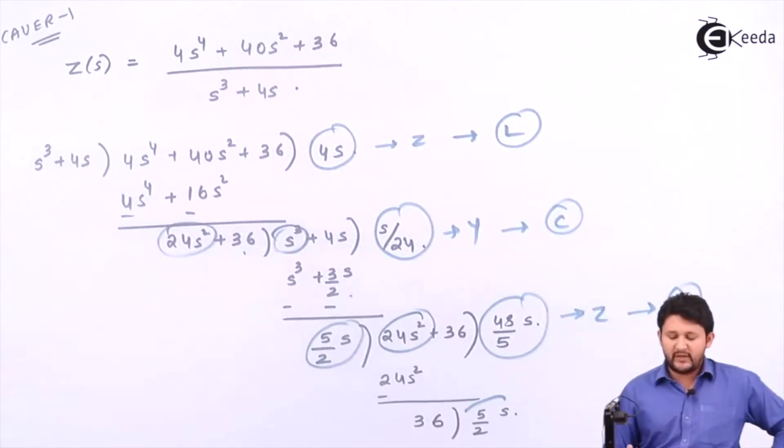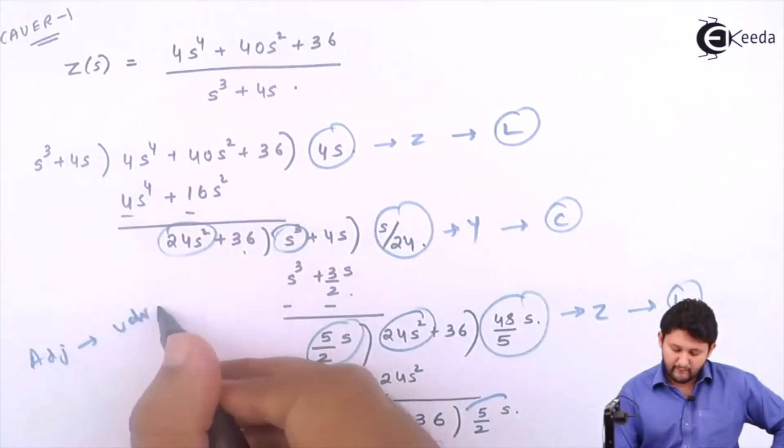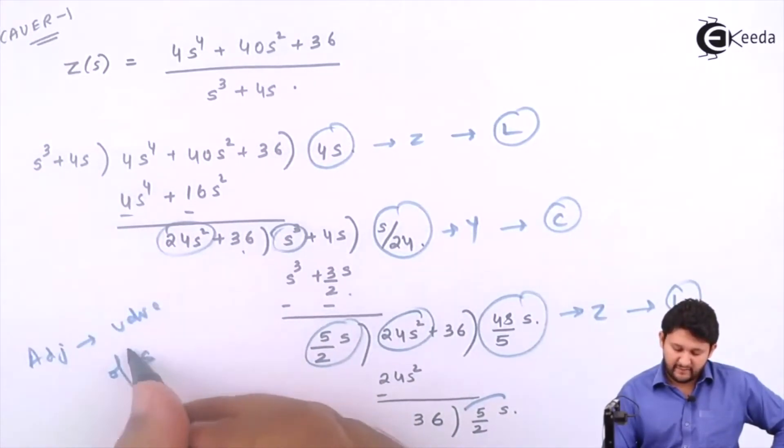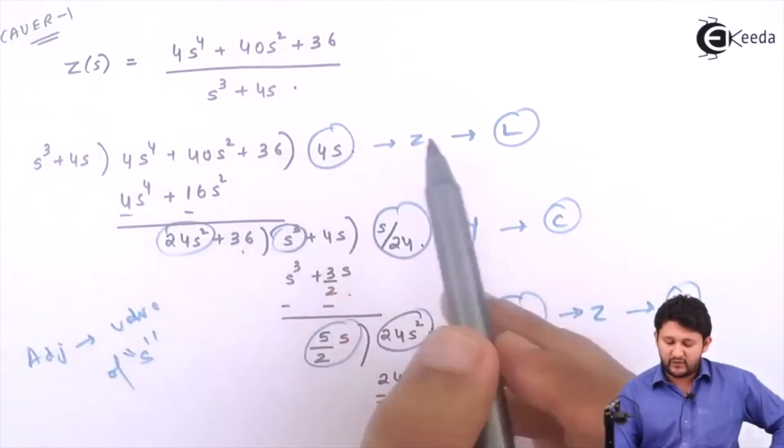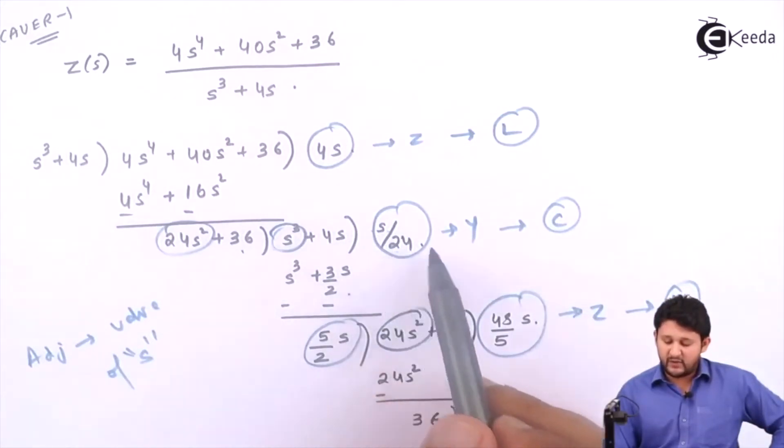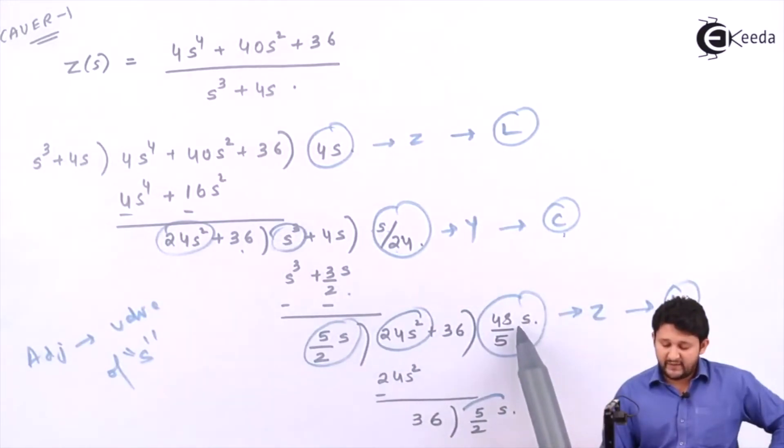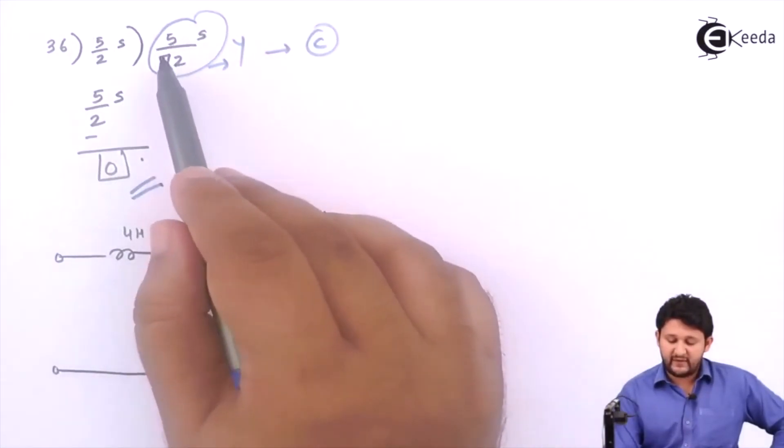Now the next question says how to get the value of s. The logic says adjacent value of s. What is the adjacent value of s? It is 4, the value of L will be 4. What is the adjacent value of s? It is 1 upon 24, the value of C will be 1 upon 24. What is the adjacent value of s? 48 upon 5, the value of L will be 48 upon 5. What is the value of C? This is 5 upon 5.